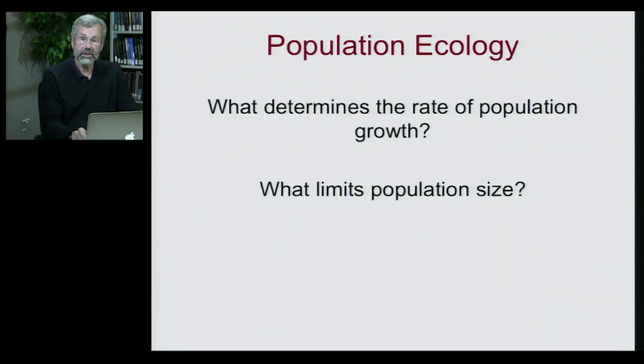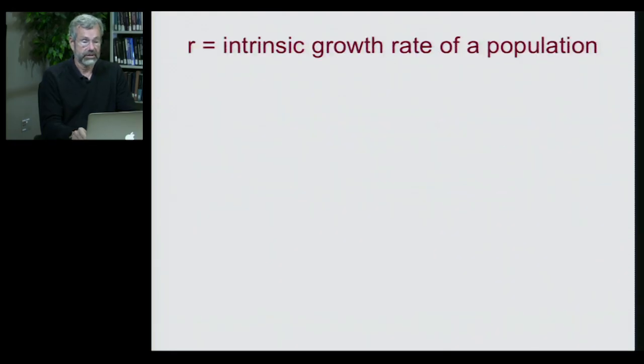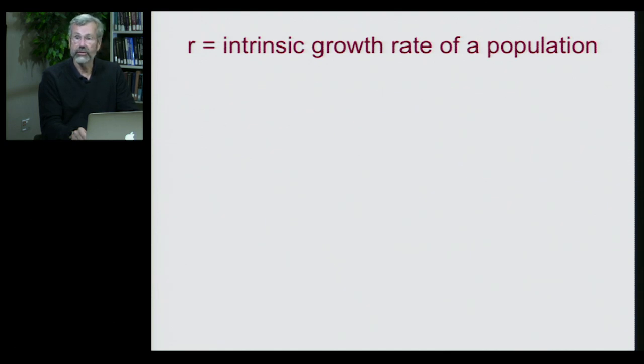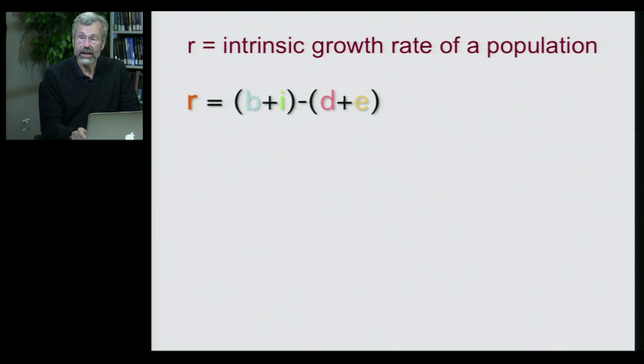Population ecology asks: what determines the rate of population growth, and what limits population size? The most important variable to begin with is called R, a letter that stands for the intrinsic growth rate of a population. R is calculated from four different parameters of demography.